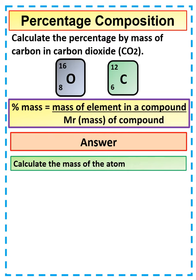The first thing we do is calculate the mass of carbon. We know carbon dioxide has one carbon and the mass of one carbon is 12, so that gives us a mass of 12.